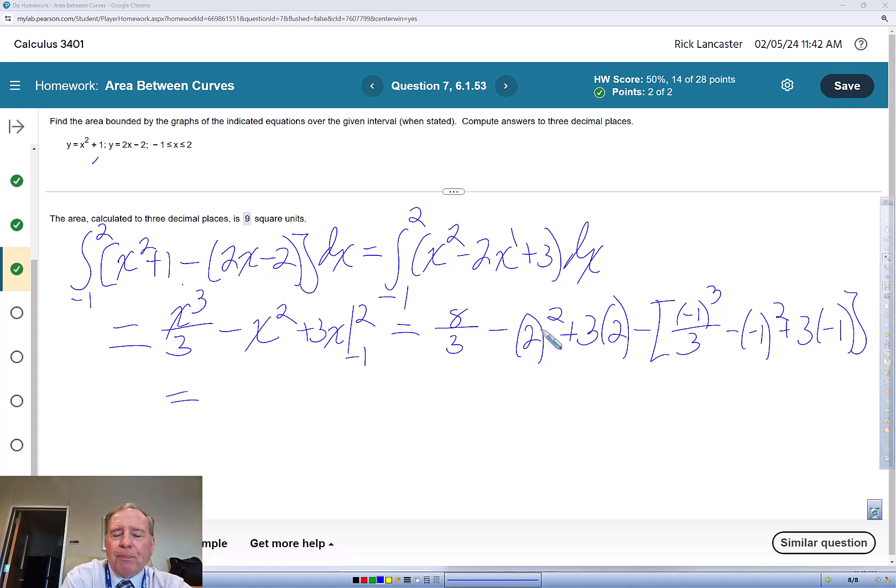Start simplifying. So this is going to be 8 thirds minus 4 plus 6, minus 6, then minus negative 1. So this is going to be plus 2, or 8 thirds plus 6 thirds, and then minus, minus, so this is going to be negative 1 third minus 3 thirds minus 9 thirds.